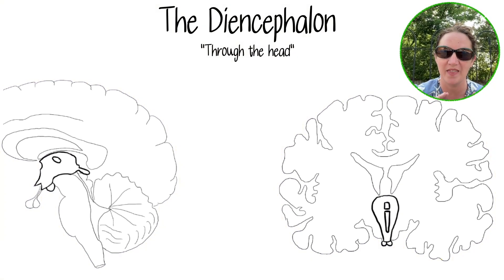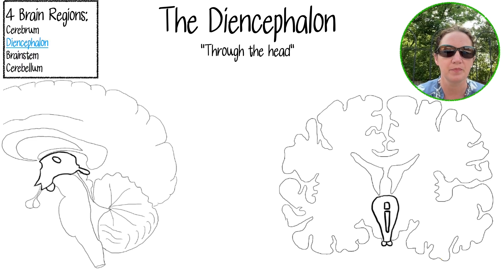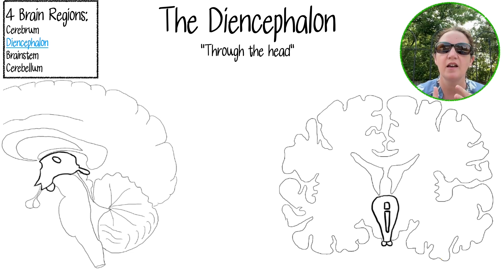The word diencephalon means 'through the head.' To recall, there are four brain regions: the cerebrum, which we talked about in the last video; the diencephalon, which we'll focus on today; the brainstem; and the cerebellum.